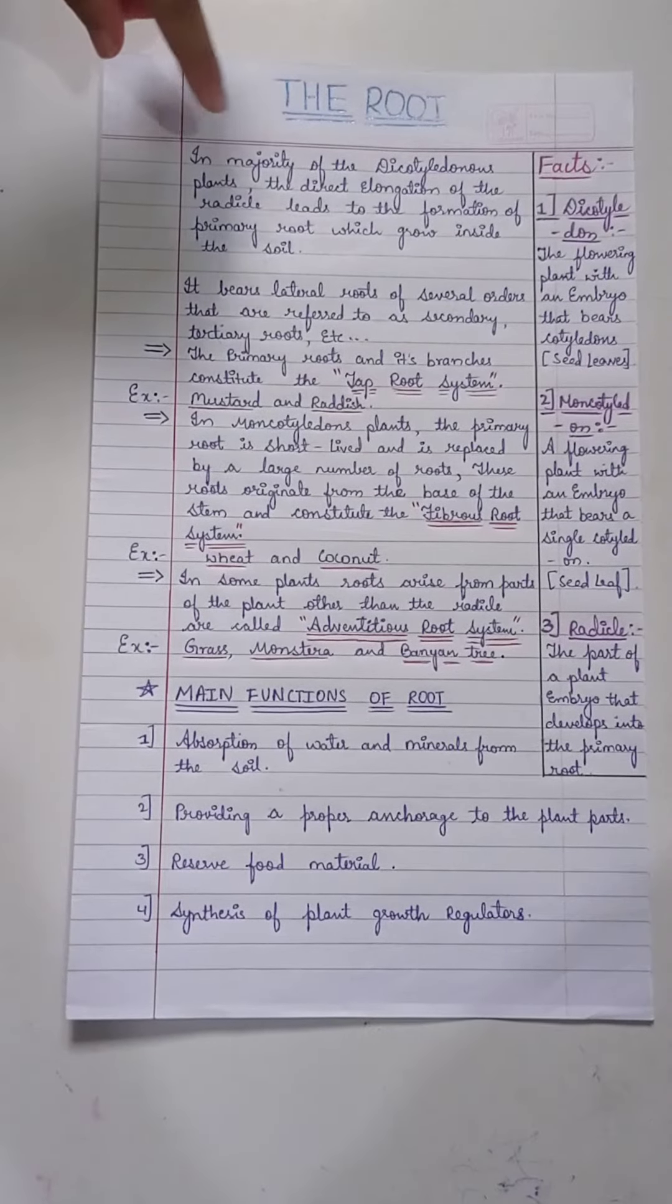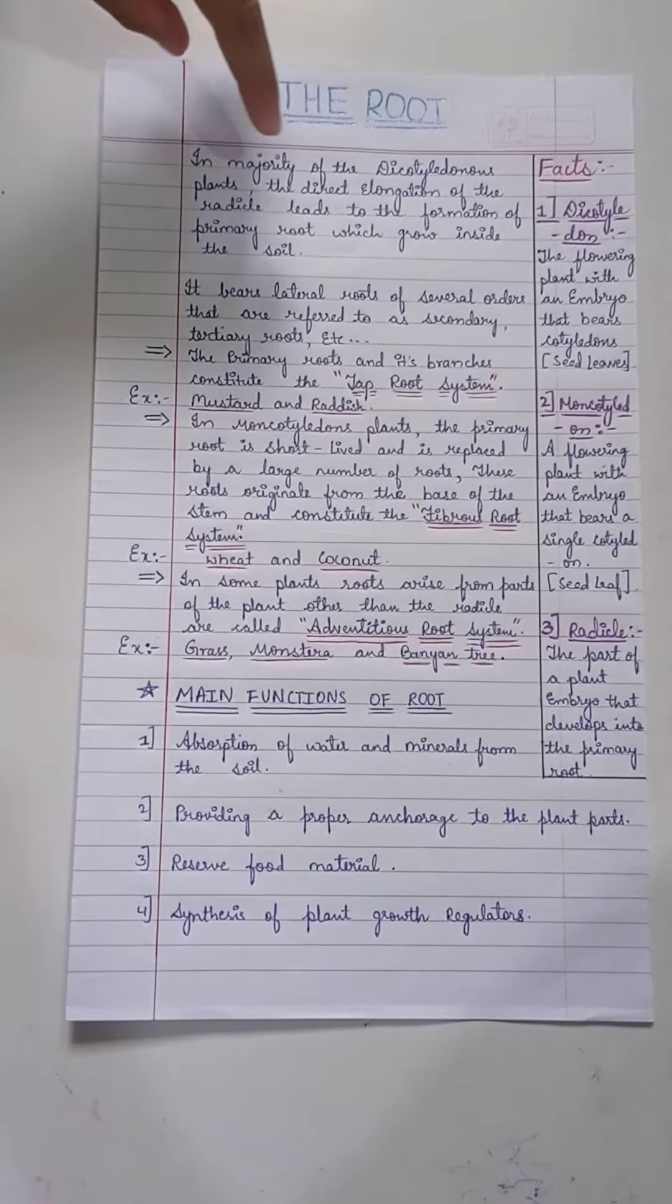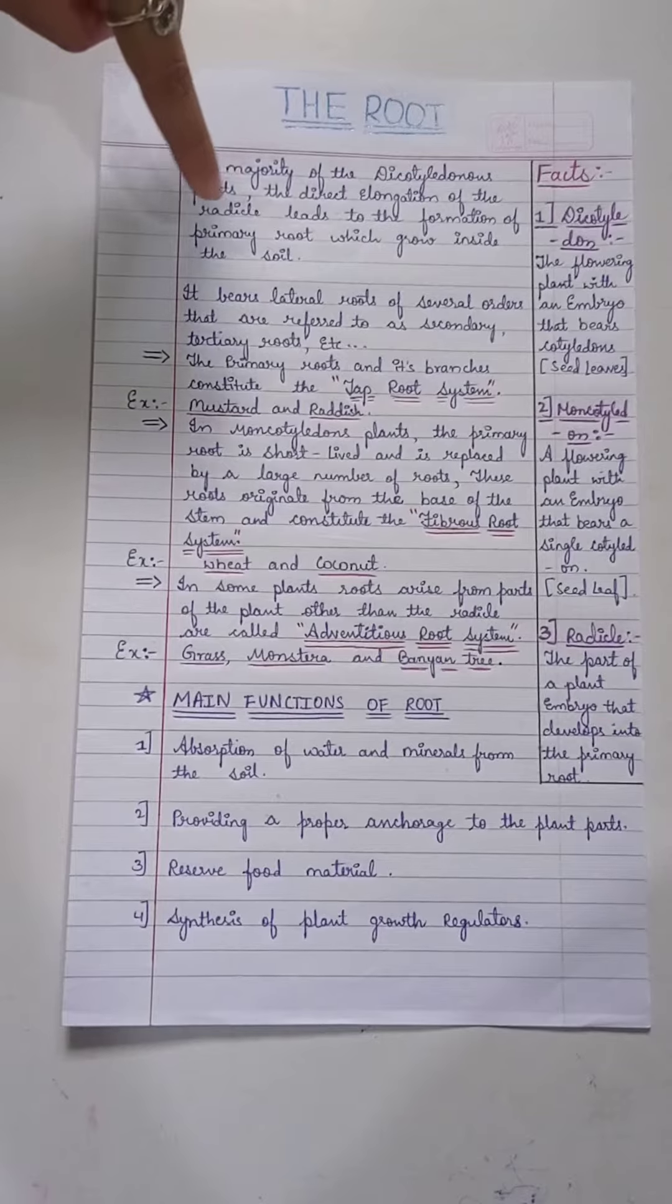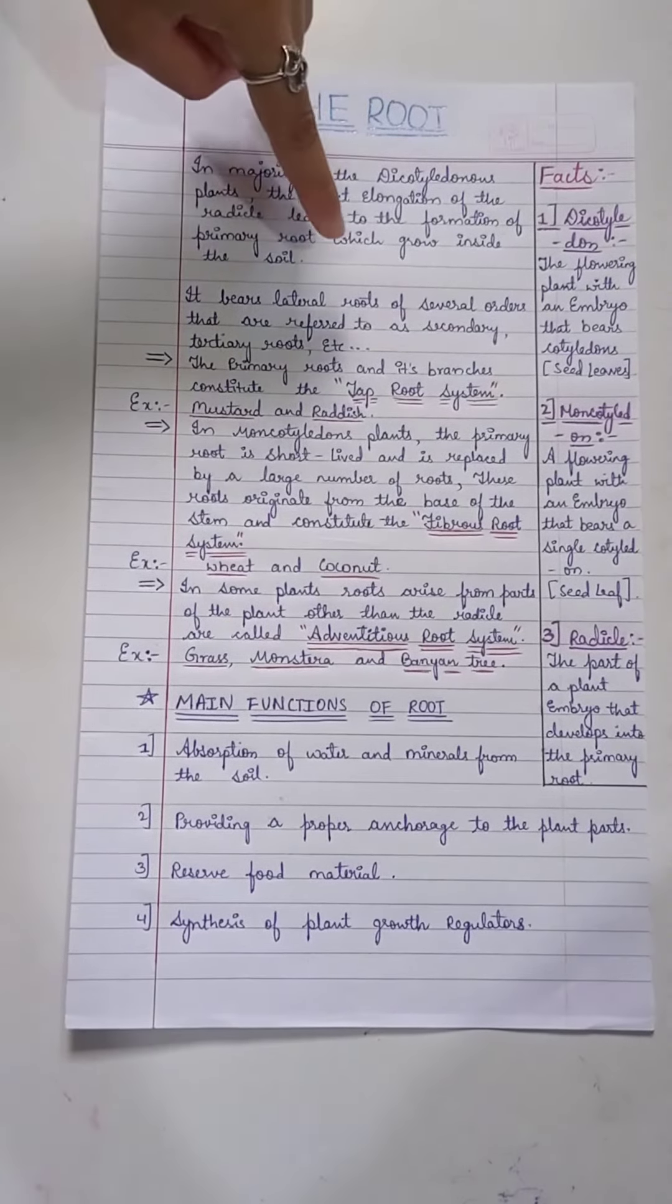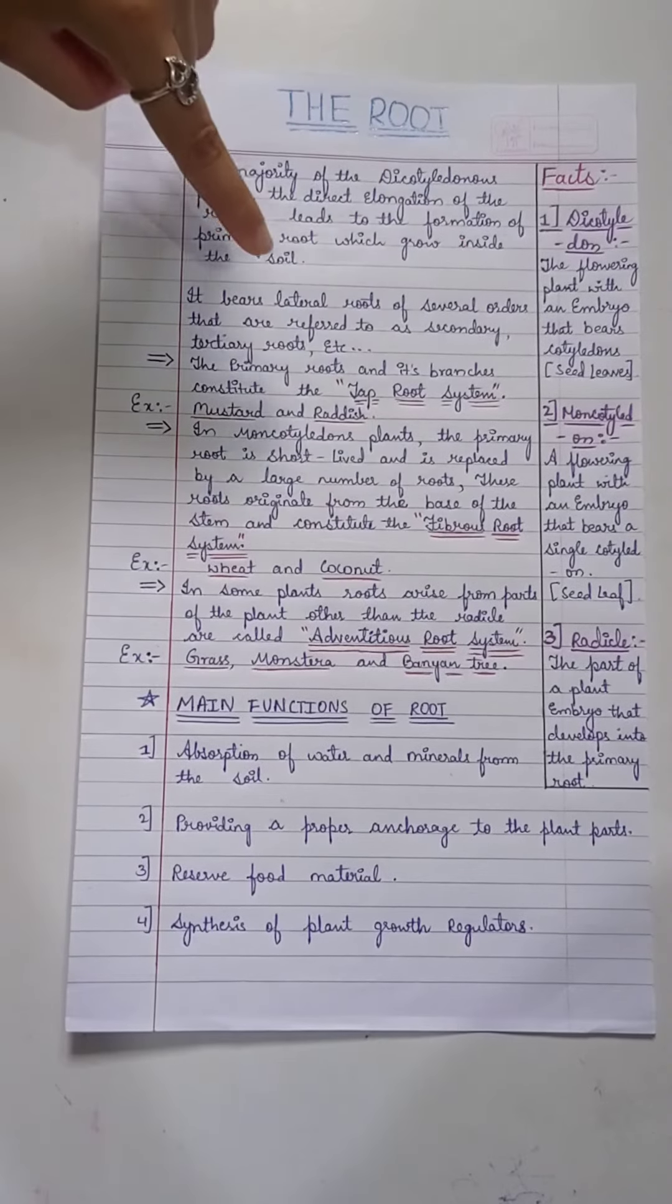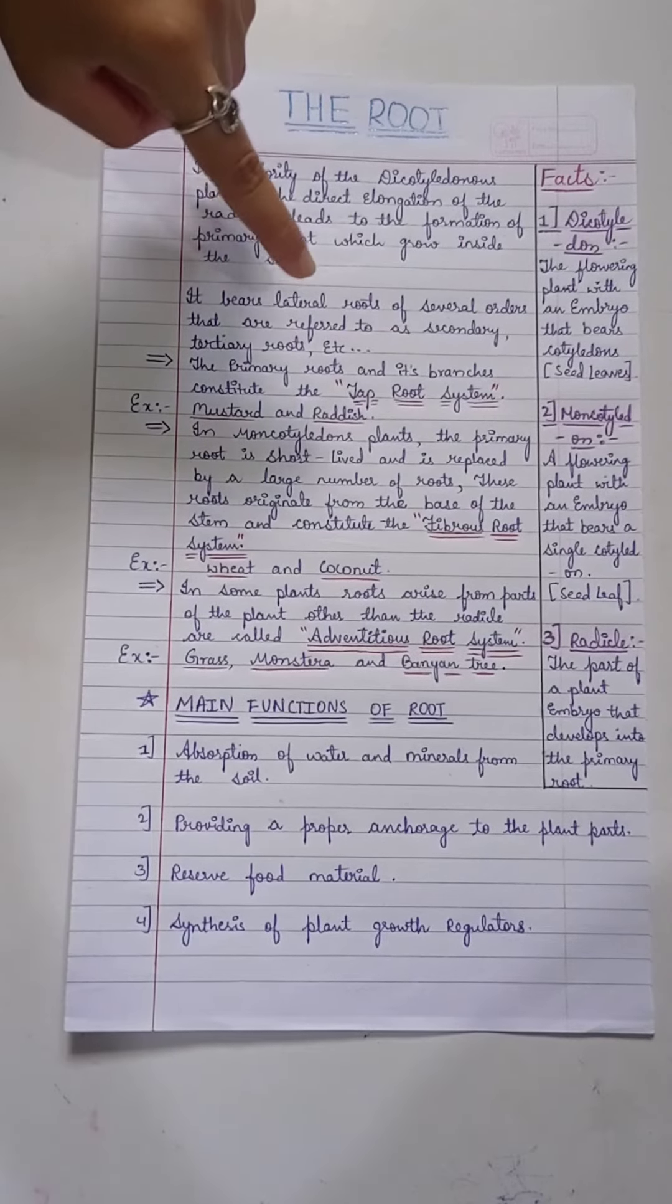In majority of the dicotyledon plants, the direct elongation of the radical leads to the formation of primary root which grows inside the soil. It bears lateral roots of several orders that are referred to as secondary, tertiary roots, etc. The primary roots and its branches constitute the taproot system, example: mustard and radish.